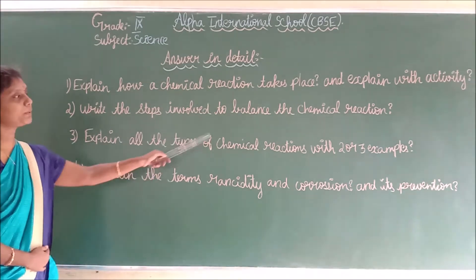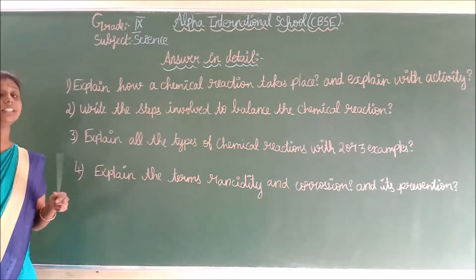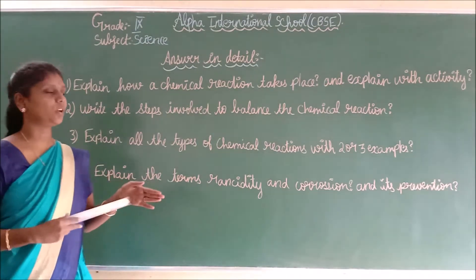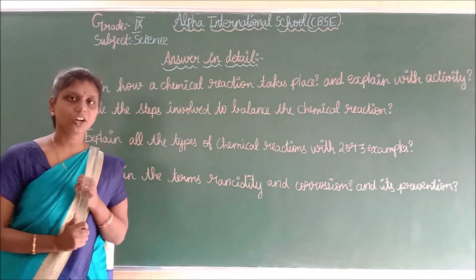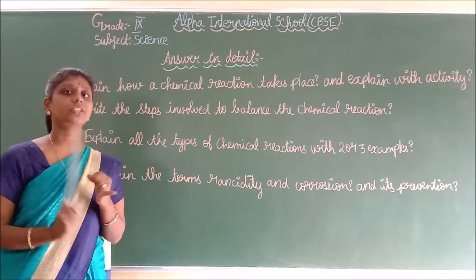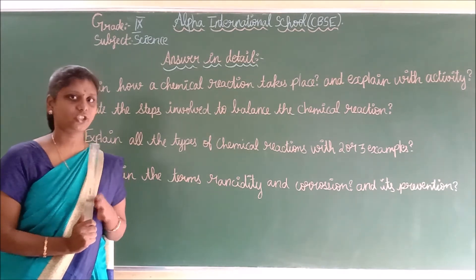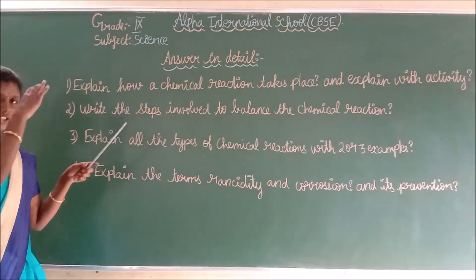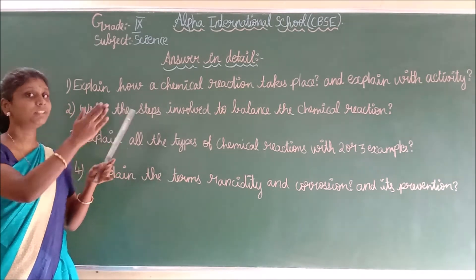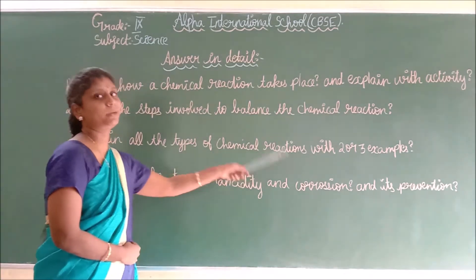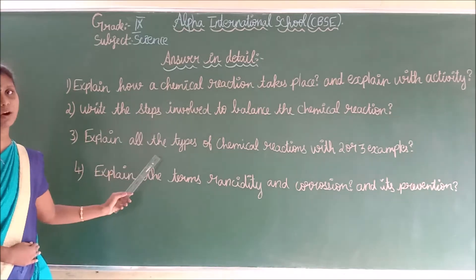Third question: explain all the types of chemical reaction with two or three examples. There are four types: combination reaction, displacement reaction, double displacement reaction, and decomposition reaction. List down all types, then explain each — combination, displacement, double displacement, and decomposition — with at least two or three examples each. Then only they will give five marks.